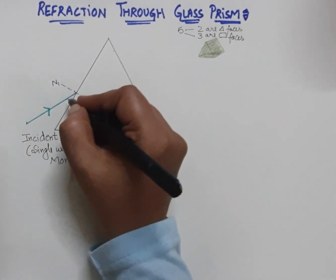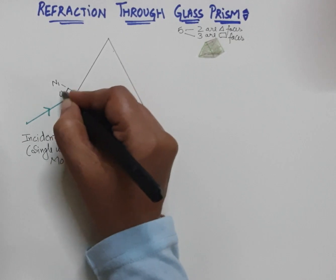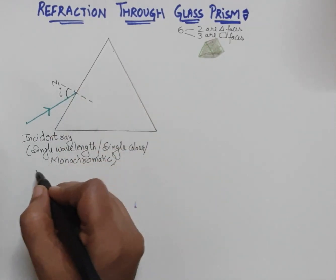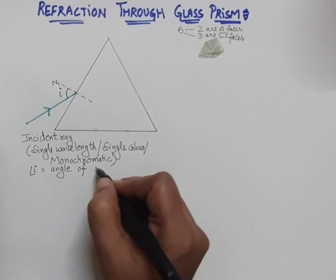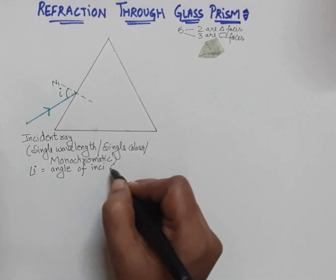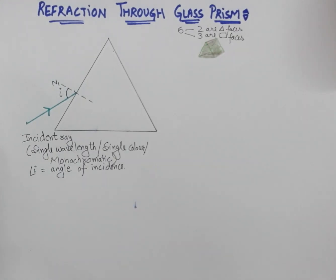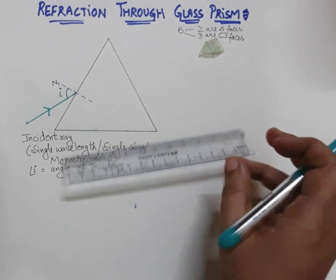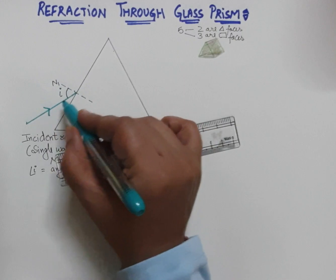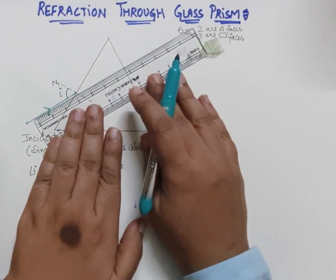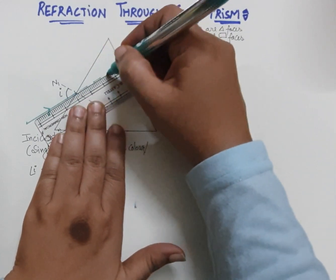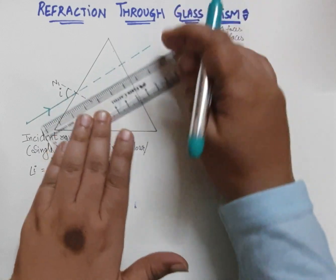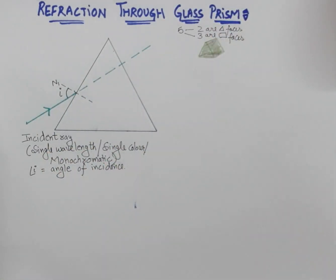This is the incident ray. The angle between the incident ray and the normal is represented by I, and this I is the angle of incidence. Now, if there is no refraction — no change in medium — the ray should travel straight. So let us draw by extending it the actual path which it should have followed if there had been no refraction of light.